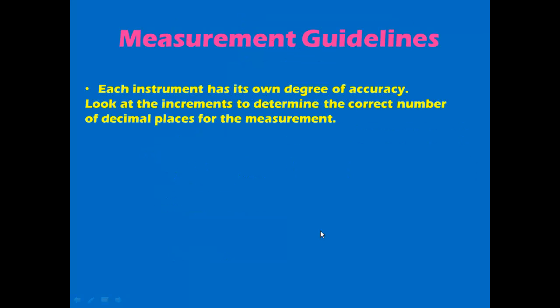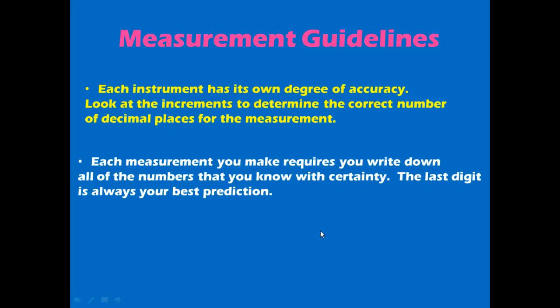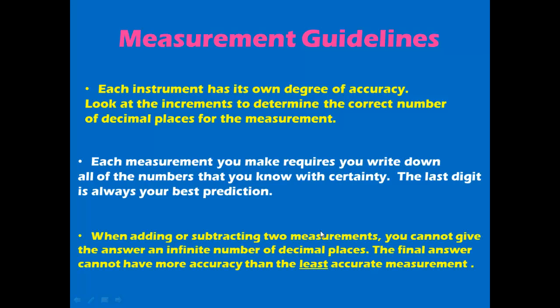Let's review some measurement guidelines. You should know that each instrument has its own degree of accuracy. You need to look at the increments and the numbers to determine the correct number of decimal places for a given measurement. For any measurement that you make, you should write down all numbers that you know with certainty. Then, the very last digit that you include is a number that you had to predict. Finally, when adding or subtracting two measurements, you cannot give an infinite number of decimal places. Your final answer cannot be more accurate than your least accurate measurement.